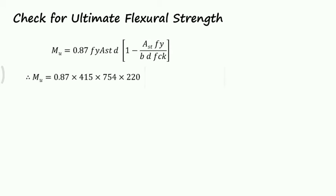Next we check for ultimate flexural strength. MU equals 0.87 FY AST times D times 1 minus AST FY divided by BD into FCK. MU equals 0.87 times FY 415 times AST provided 754 times D provided 220.